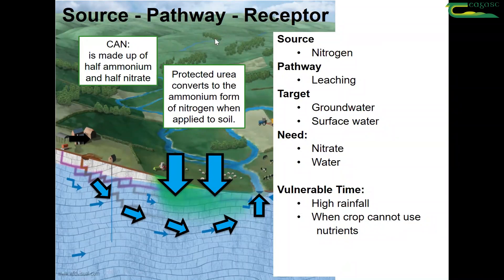That groundwater, as you can see here by the arrows, eventually ends up in surface water, and that surface water heads off towards the estuary. So we need two things: we need nitrate and water.